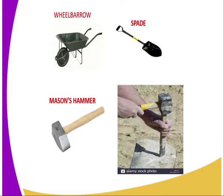Then we have the Mason's Hammer. A Mason's Hammer is the one which is used to strike the head of a cold chisel whenever a mason is shaping stones or removing the unneeded part of a stone during construction.